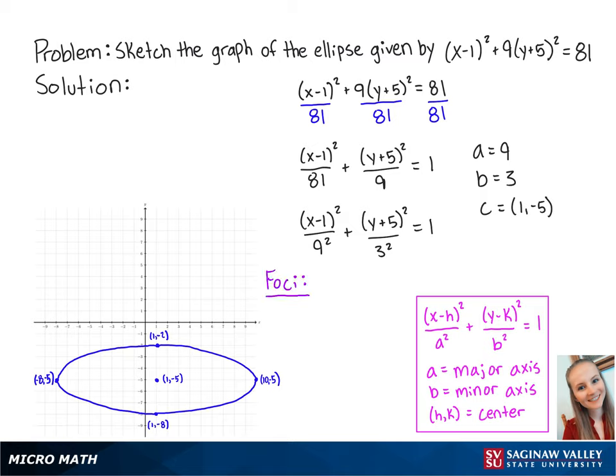In addition, we can also find the foci. We can do this by using the equation c² = a² - b², where c represents the distance from the center on the major axis. So for this problem, we have 9² - 3², which is equal to 72.